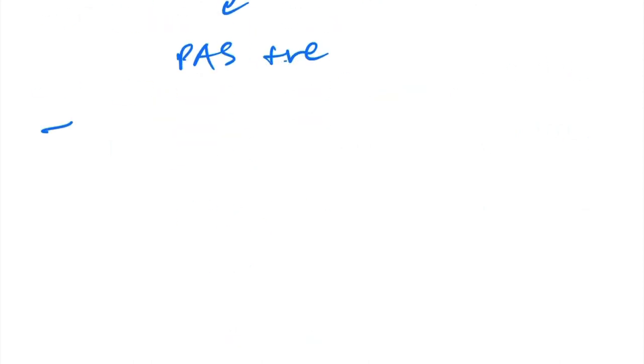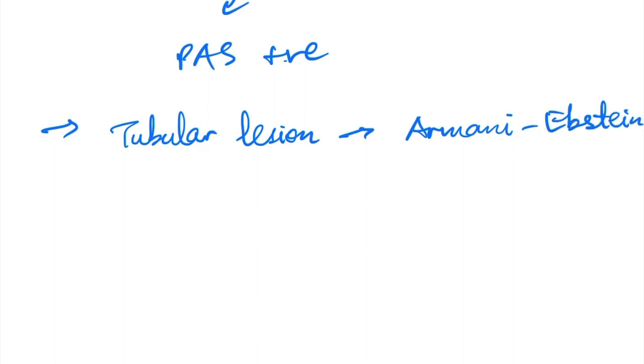Another important one is a tubular lesion. This tubular lesion is called Armini-Epstein lesion, wherein there is glycogen being deposited in the proximal convoluted tubule.